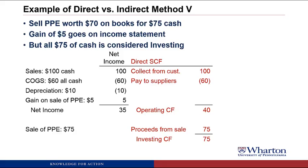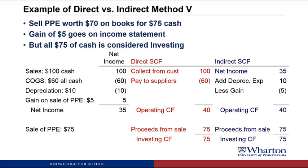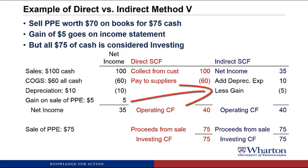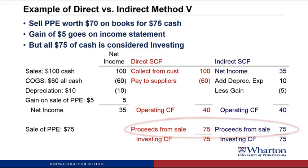We have investing cash flow as the full $75 proceeds from sale of PP&E. Under the indirect method, we start with net income of $35, add back depreciation expense of $10 because it's a non-cash expense, and then we have to remove the gain — otherwise we'll double count that cash flow. A gain increases net income, so to remove it we need to subtract the gain. Once we do that, we end up with operating cash flow of $40 — the same under the indirect and direct method. And then we have again the full $75 as an investing cash flow.